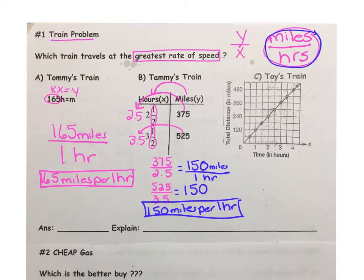And finally, I hope you're recording this on your notebook paper or on the worksheet. Let's take a look at Toy's trains. Now, we can clearly see it's a proportional relationship, as all three of these are. But anytime you get a graph, let's construct a quick t-table.